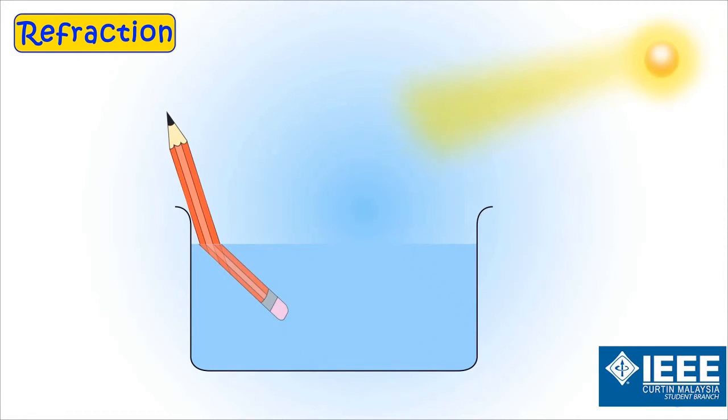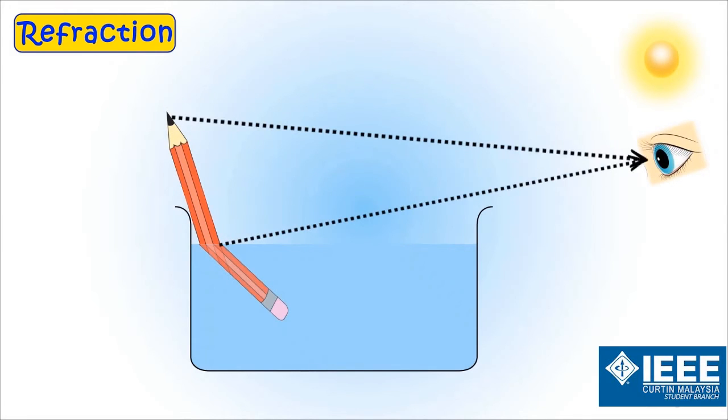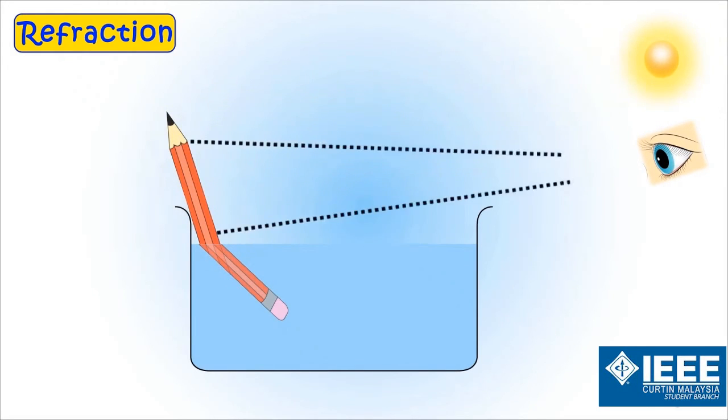We see everything because light falling on it gets reflected back to our eyes. But in the case of this pencil, the light falling on the half of the pencil which is not in the water is directly getting reflected back to our eyes without any bending. So we see that pencil's straight.